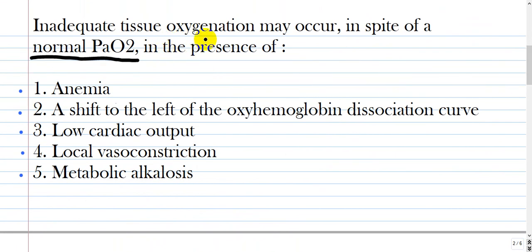Inadequate tissue oxygenation may occur in spite of a normal PaO2, which is partial pressure of oxygen in the blood, in presence of the following. You see the options: all of them are correct. Anemia, a shift to the left of the oxyhemoglobin dissociation curve, low cardiac output, local vasoconstriction, and metabolic alkalosis.